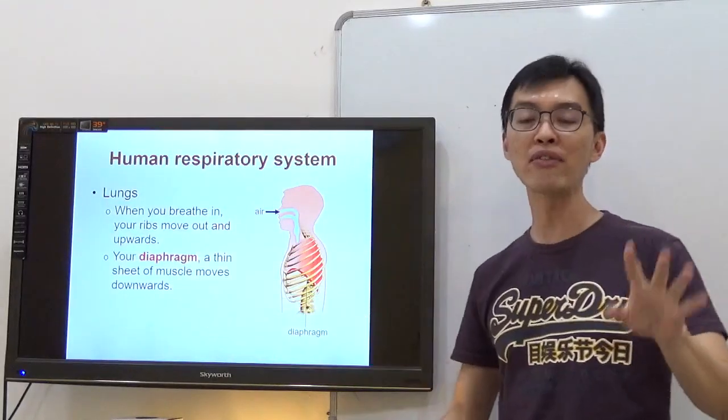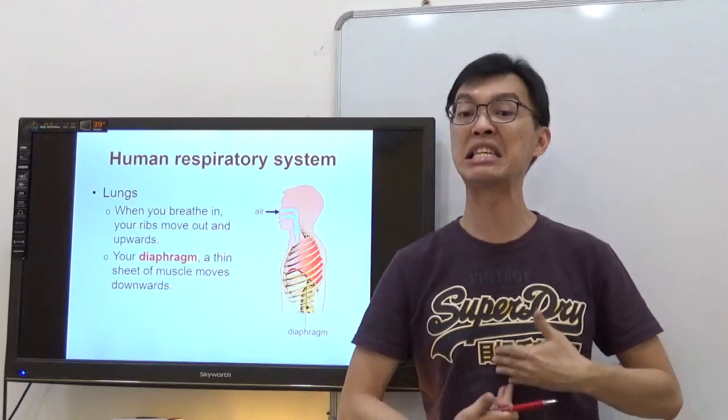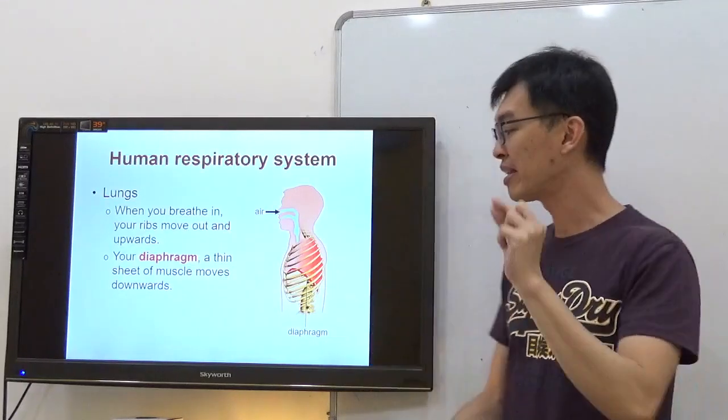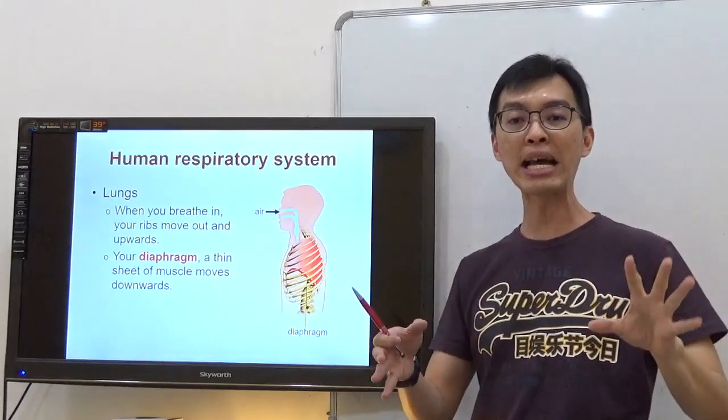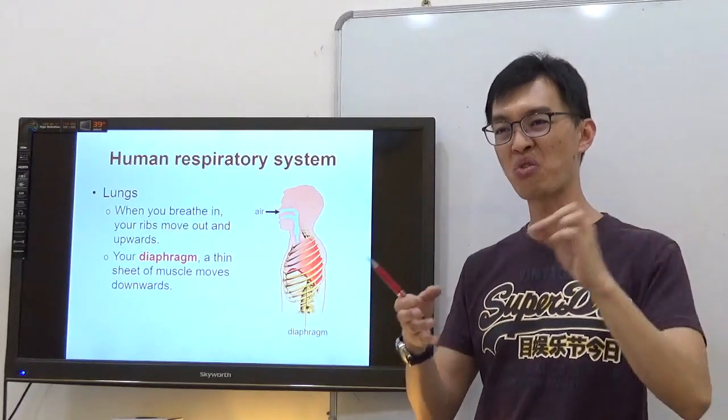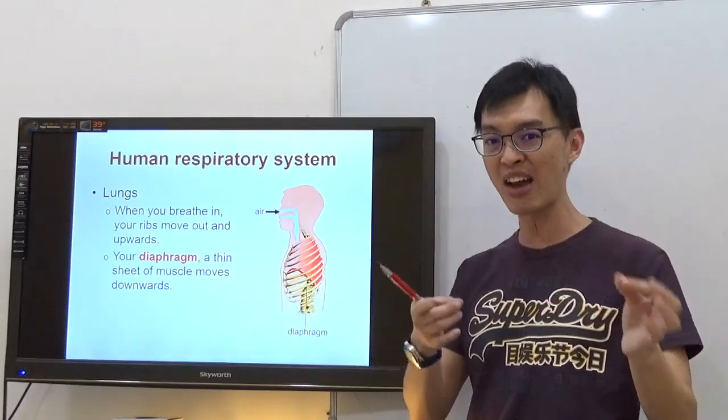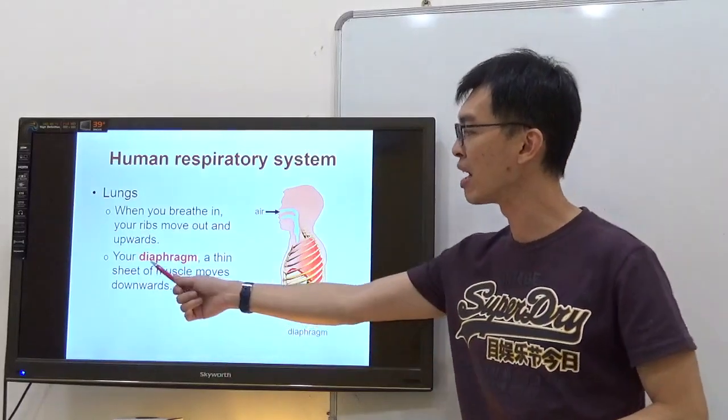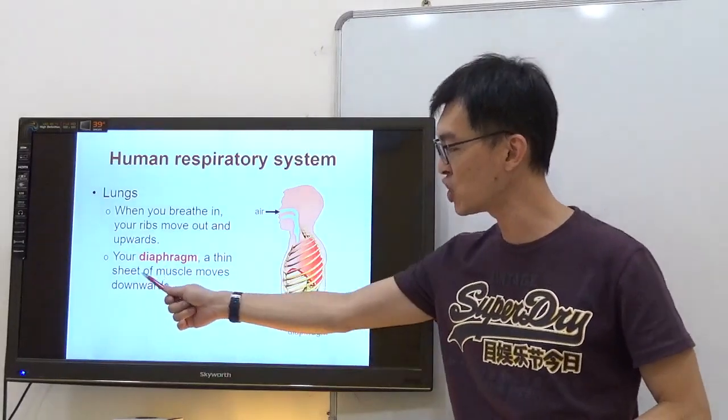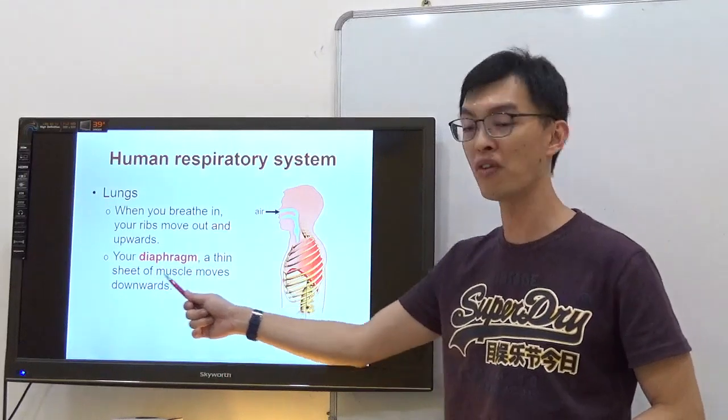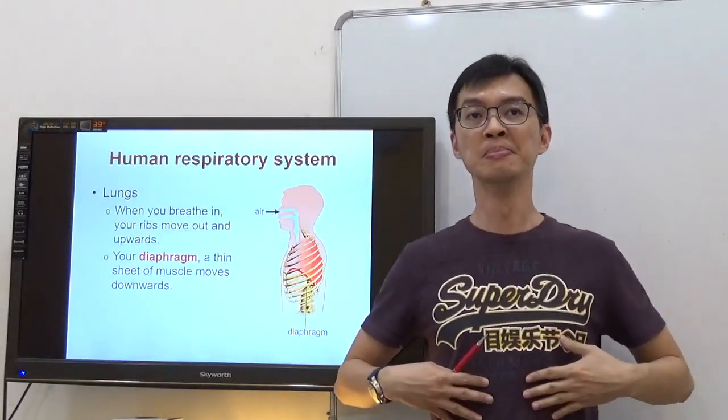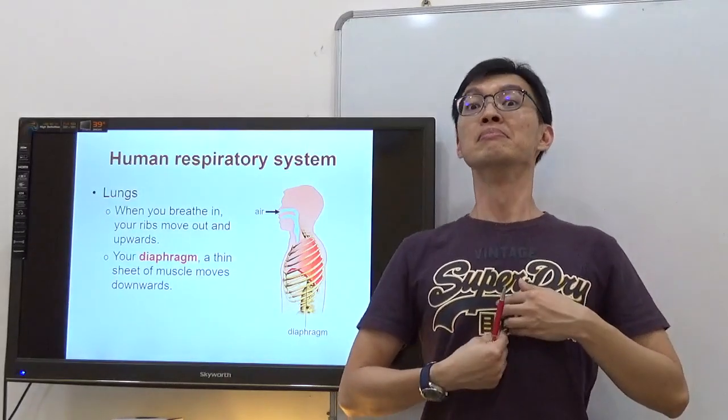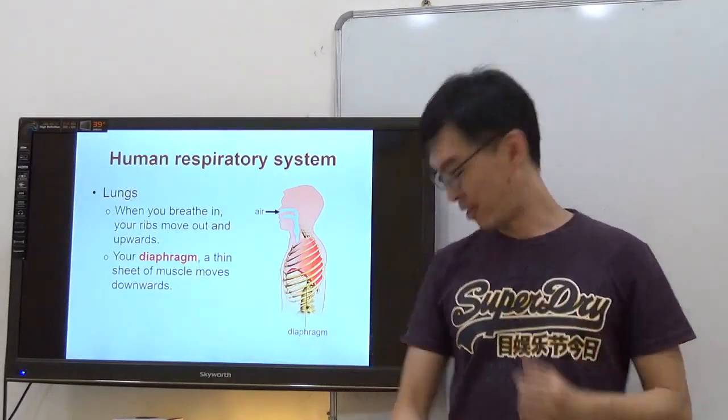Your diaphragm is something that you can't see. It's inside our body. This diaphragm is like a rubber sheet. During exam papers, you'll always see the rubber sheets of the diaphragm move downwards. The diaphragm, a thin sheet of muscle, moves downwards when you breathe in.